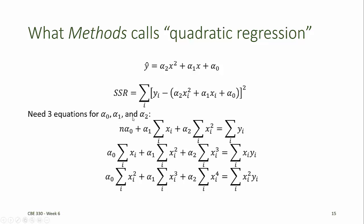The three equations that we need to solve for alpha 0, alpha 1, and alpha 2 are then obtained by taking the partial derivatives of this SSR equation with respect to each of the unknown coefficients: alpha 1, alpha 2, and alpha 0. Doing that provides us with a set of three linear equations for the three unknowns.